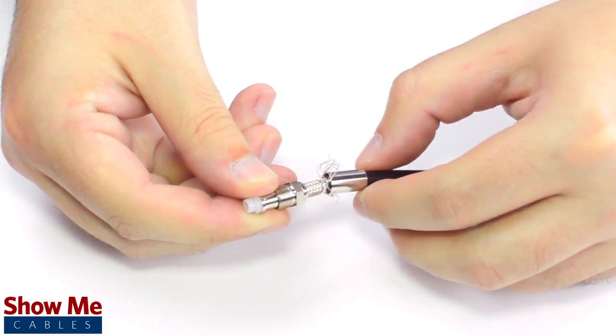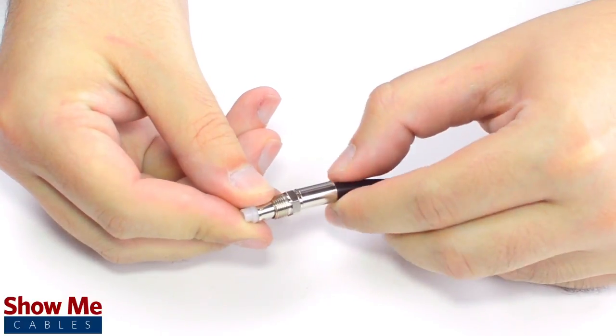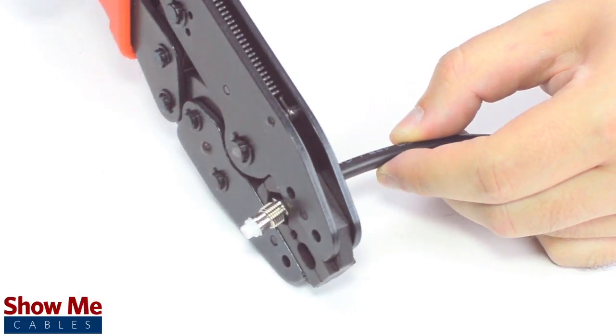Then, slide the ferrule up to the base of the connector, folding the shield with it. Crimp the ferrule onto the outer jacket to complete termination.